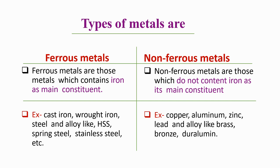To summarize: it is very simple to identify ferrous and non-ferrous metals. Those metals which contain iron as their major constituent — more than 95 to 96 percent — are ferrous metals. Those which do not contain iron as their major constituent, such as copper, aluminium, zinc, and their alloys, are non-ferrous metals.